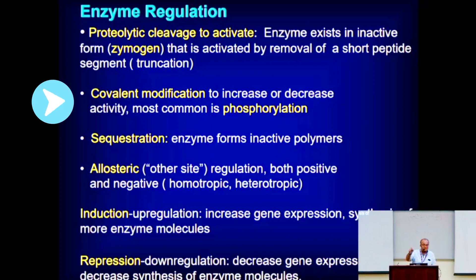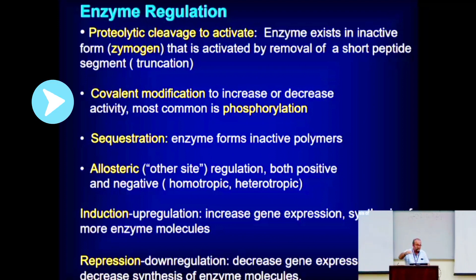Typically, that covalent bond — the most common type — is the addition of a phosphate. That phosphate typically comes from ATP, and you need an enzyme to add it, so you need a protein kinase.